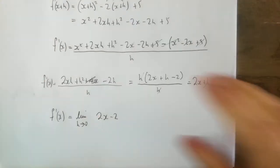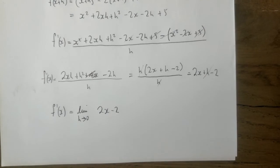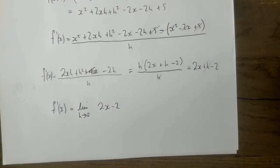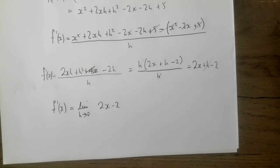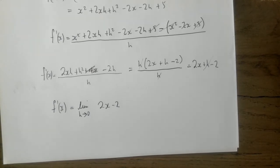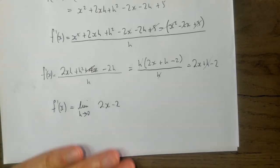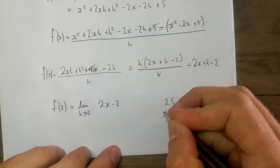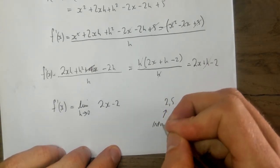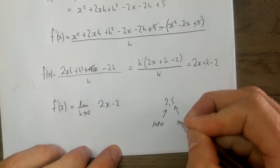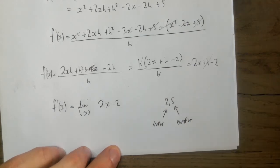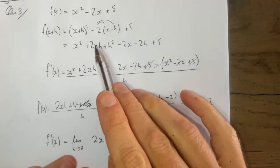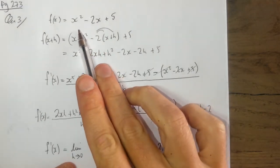Now let's look at the application, which is the second part of the question. Going to our books, page 273, it says: hence find the slope of the tangent at the point two, five. At the point two, five - two is the input or x value, five is the output.